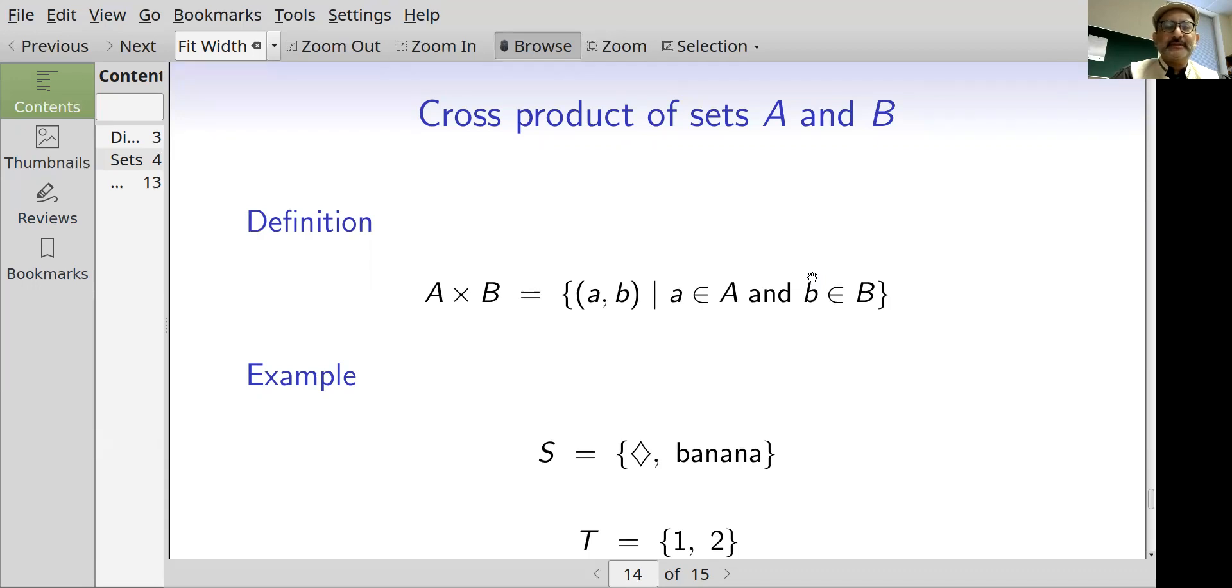You already have an example of this that you've used before: the XY plane. That's R cross R or the Cartesian product of R with itself.